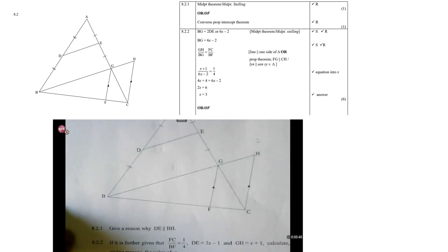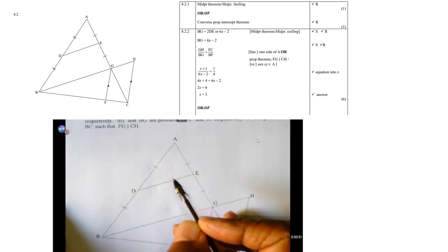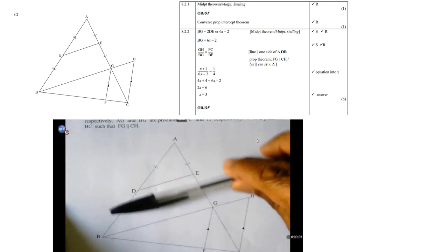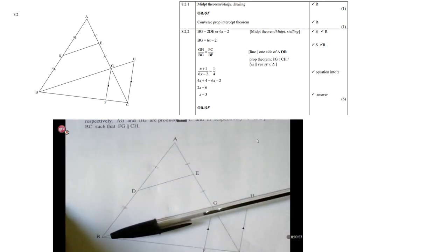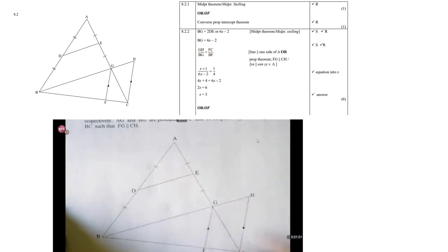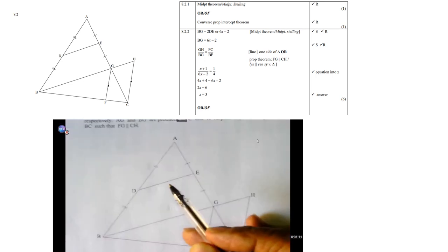The first question is, give a reason why DE is parallel to BH. Why is DE parallel to BH? So, in other words, why is that line parallel to that line? Well, that brings you to a grade 10 theorem, namely that line segment drawn from the midpoint of one side to the midpoint of the other side. Such a line is parallel to the third side and also equals to a half of that side.